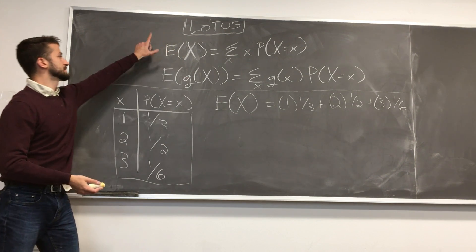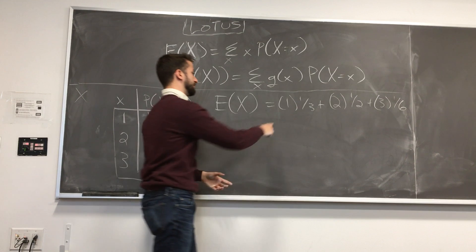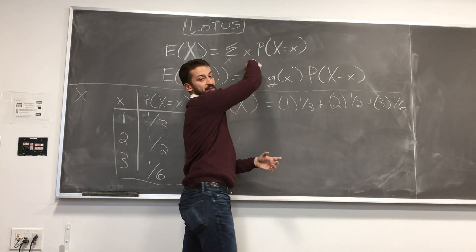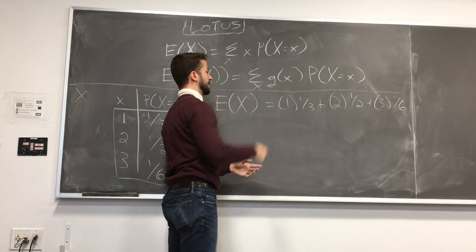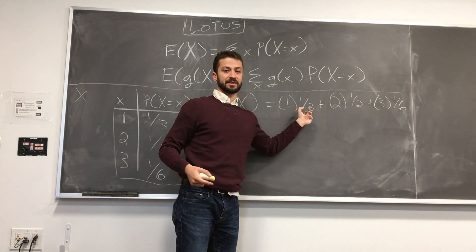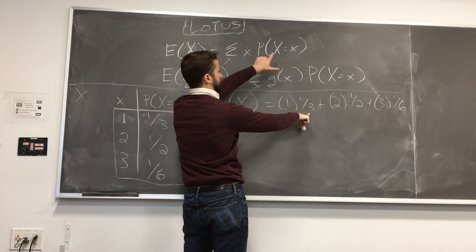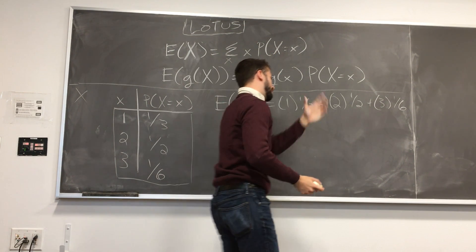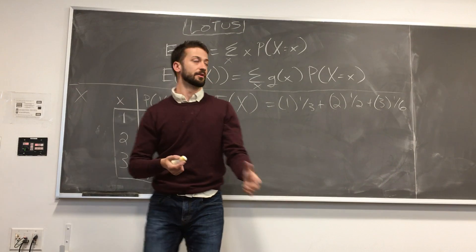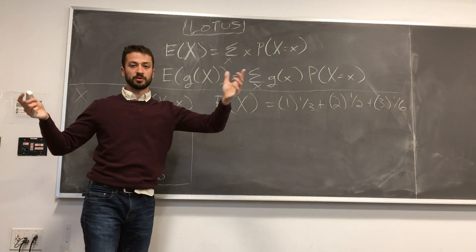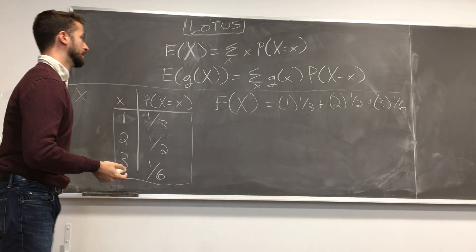And this actually matches the formula we have up here, right? We're taking the values, 1, 2, 3, that's the little x's, the values that big x can take on, times the PMF times the probability it takes on these values. Like here, we have 1 is x, and 1 third is the probability that big x equals little x. And we just sum over all cases, and that's what Lotus is doing in this simple case. So super intuitive, makes sense, it's something that you would do on your own.